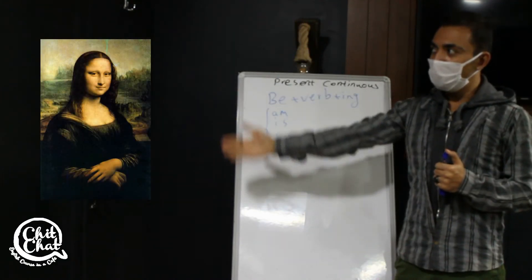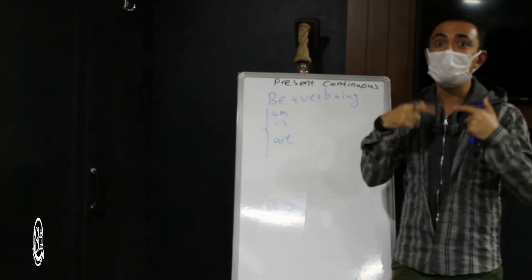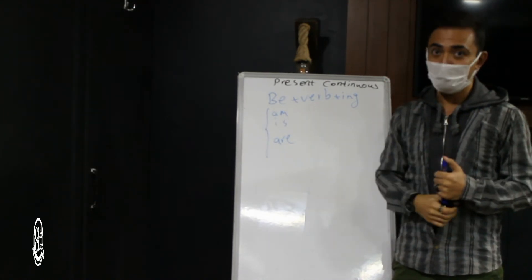For example, look at Mona Lisa's picture. She is laughing or she is smiling. It is ING form. This is another usage.